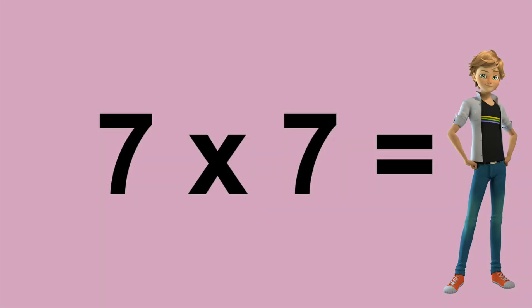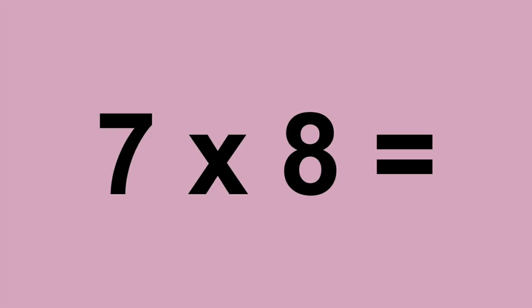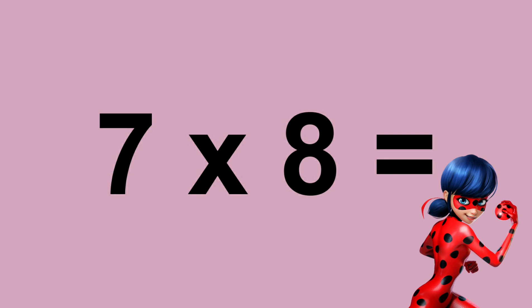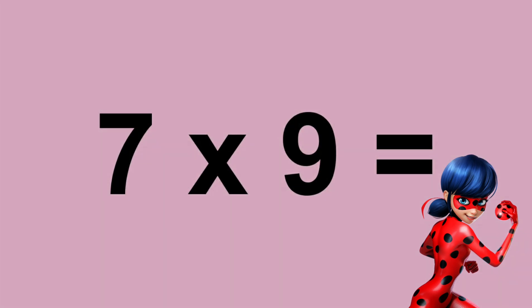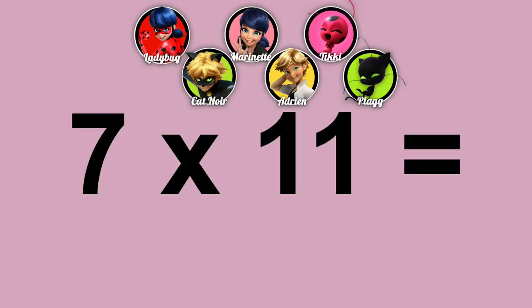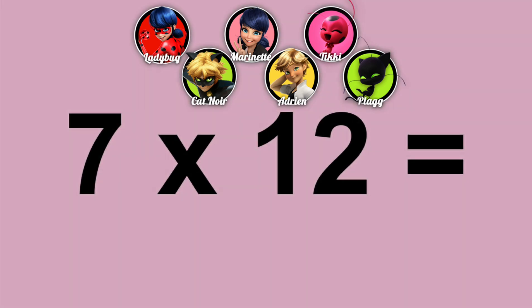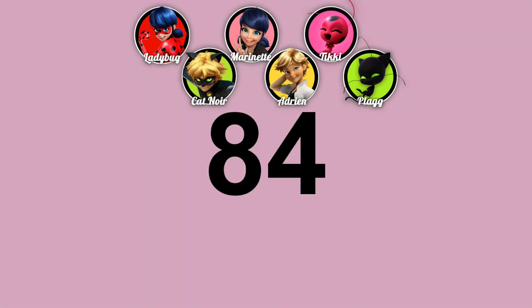Seven times seven equals forty-nine. Seven times eight equals fifty-six. Seven times nine equals sixty-three. Seven times ten equals seventy. Seven times eleven equals seventy-seven. Seven times twelve equals eighty-four.